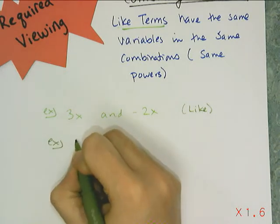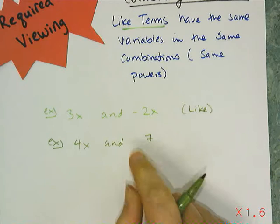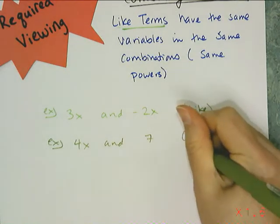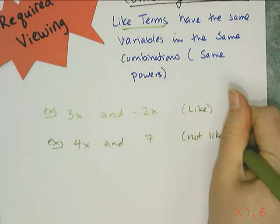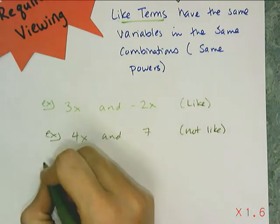Compared to say a 4x and a 7, those are not like terms because 7 does not have a variable. And so I can't combine them into a single term. If I add them together they just stay 4x plus 7.